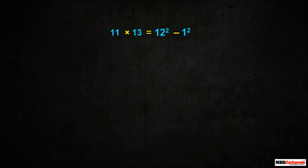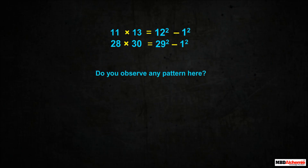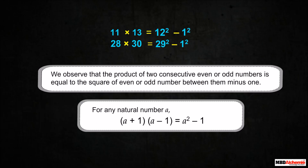Similarly, the area of a rectangle of sides 28 units and 30 units is written as the area of a square of length 29 minus the area of a unit square. Do you observe any pattern here? Yes — the product of two consecutive even or odd numbers is equal to the square of the even or odd number between them, minus 1. So, in general, if A is any natural number, then (A + 1)(A − 1) = A² − 1.